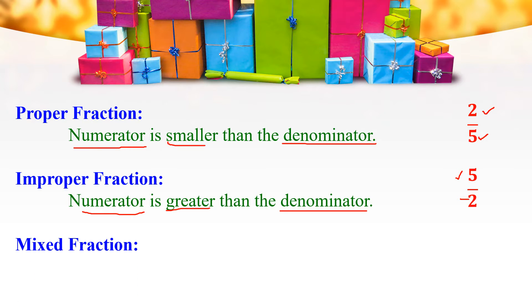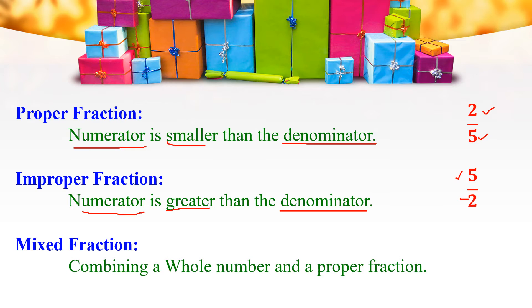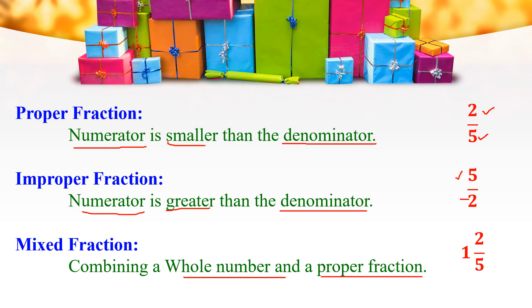Mixed Fraction. A combination of a whole number and a proper fraction is called a Mixed Fraction. For example, 1 and 2 by 5. Here, 1 is the whole part and 2 by 5 is the proper fraction. Therefore, 1 and 2 by 5 is a Mixed Fraction.